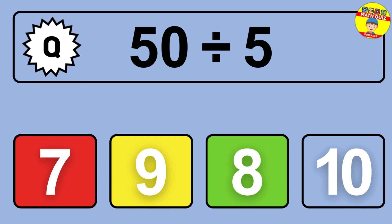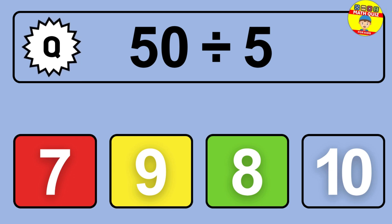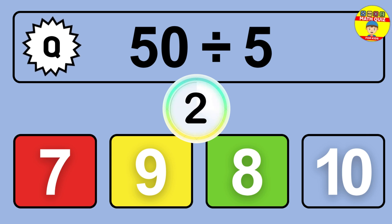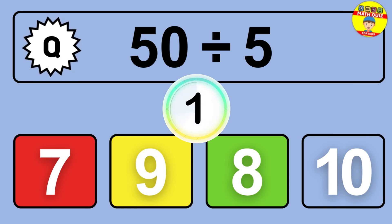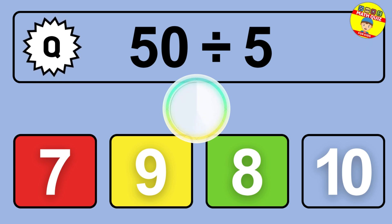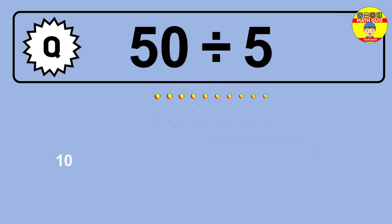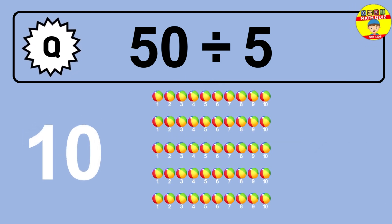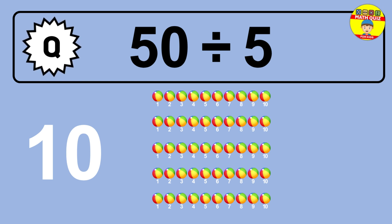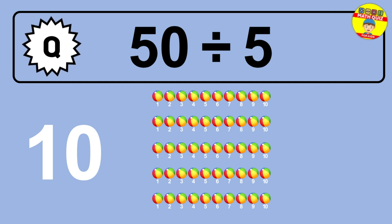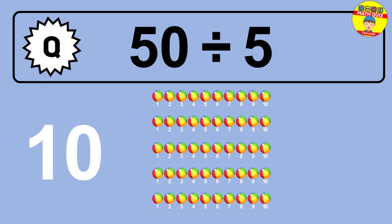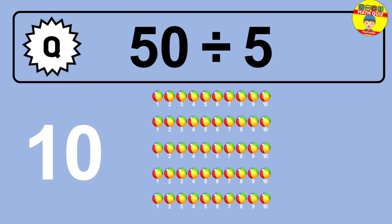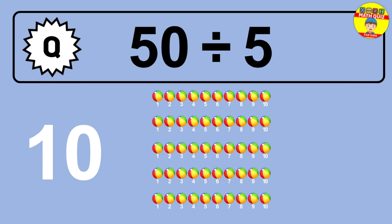What is 50 divided by 5? Imagine you have 50 objects to divide into groups of 5. How many groups can you make? Let's think about it. Ready to find out? Let's break it down. Imagine you have 50 objects — can you picture them lined up?